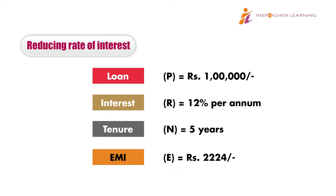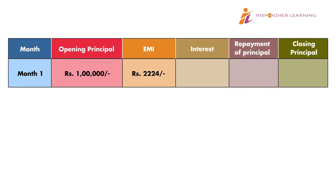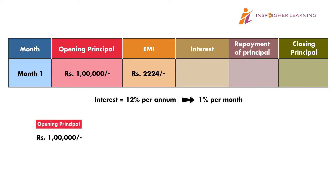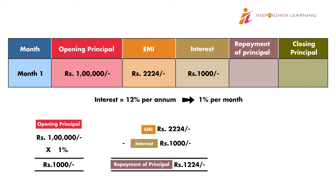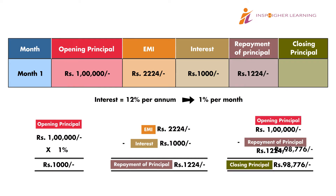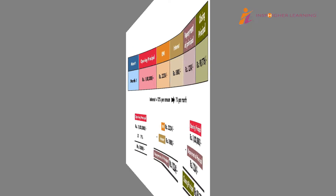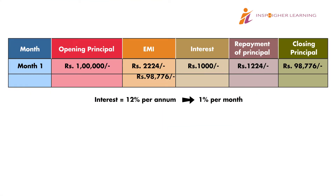For now, let's understand how the interest-principal breakup happens each month. When EMI is due in the first month, the borrower has used the loan for one month and therefore must pay interest on this money. Interest is 12% per annum, but because it is for one month, it will be charged at an equivalent monthly rate of 1%. One percent on 1 lakh rupees is 1,000 rupees. When we pay the EMI, 1,000 rupees goes towards interest and what remains goes towards repayment of principal.